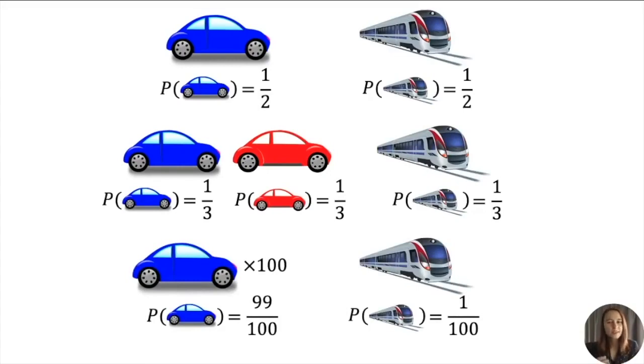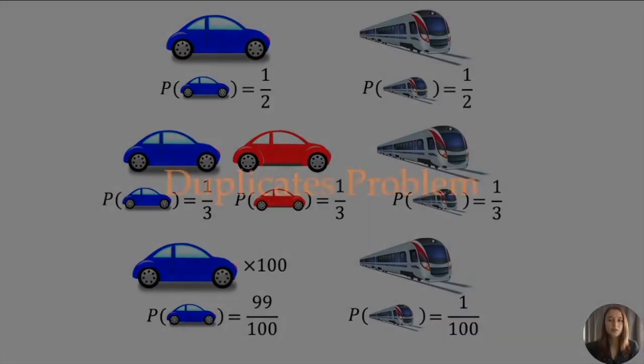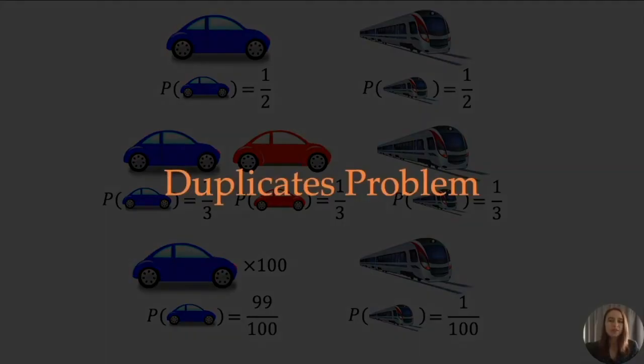This simple example showcases the fundamental issue with these models, called the duplicates problem. Should the addition of these duplicate cars reduce the other option's probability by that much? Now, what does this have to do with robotics? Do we even have duplicates in robotic tasks? It turns out not quite, but what we have is a lot worse.